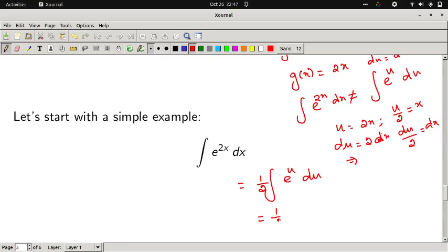That is very simple. Exponential of 1 by 2, we get exponential of u plus c. We already know that it is 1 by 2, so u is 2x plus c. This is our final answer.